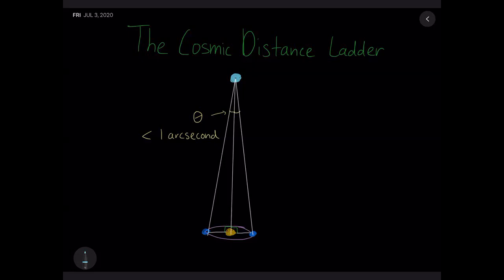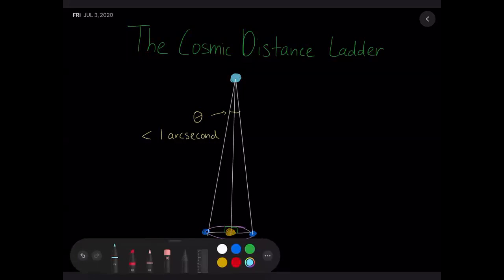If you repeat the experiment with your thumb stretched farther away, it moves much less — the same principle applies to stars. The farther the star, the smaller the apparent shift. These angles change by just one arc second, requiring very powerful instruments. A telescope called Hipparcos, launched around 1987, tracked the parallax of stars within a thousand light years and provided some of the most accurate measurements at that time.